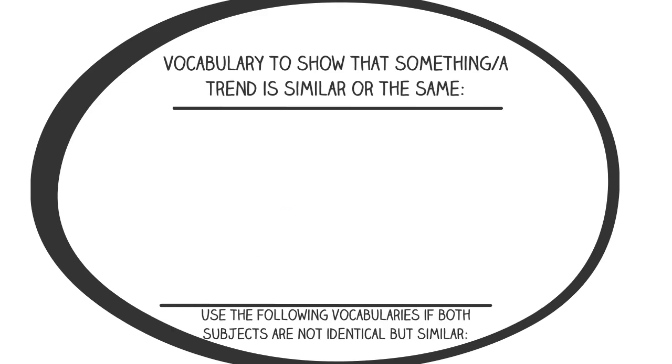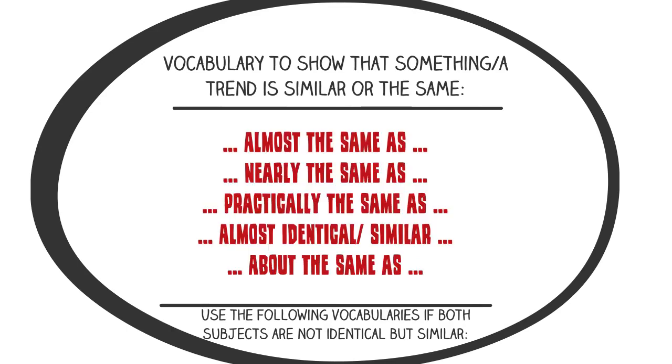Use the following vocabularies if both subjects are not identical but similar: almost the same as, nearly the same as, practically the same as, almost identical/similar, about the same as.